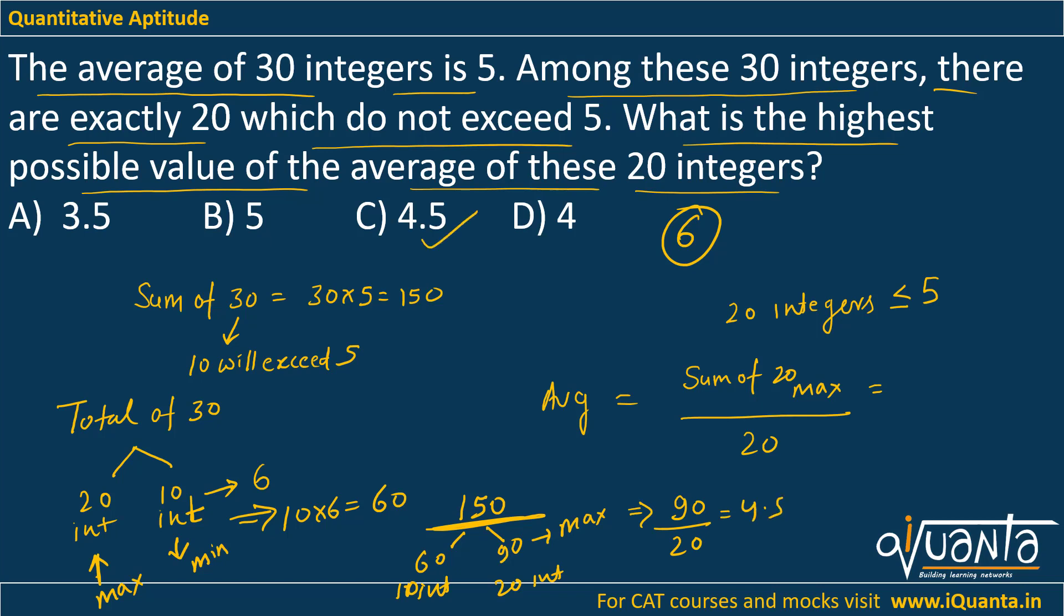So the key thing here is to divide those 30 integers into 10 and 20. Then we have to minimize the sum of those 10 integers. Hence, automatically the sum of the other 20 integers will be maximized, and we get it as 90. If we divide it by 20, we get the highest average of those 20 integers as 4.5.